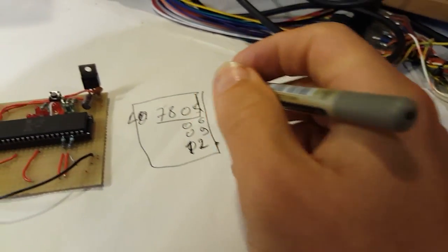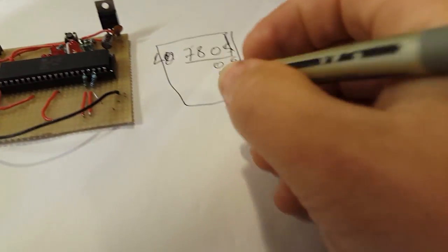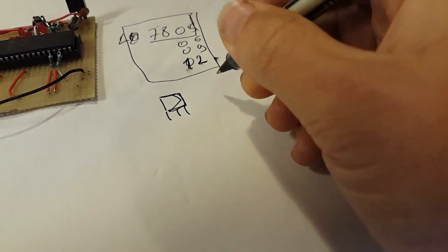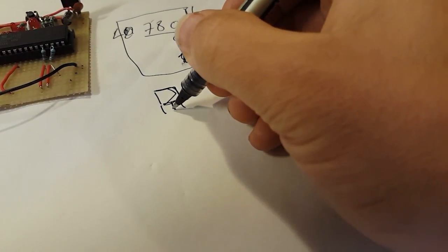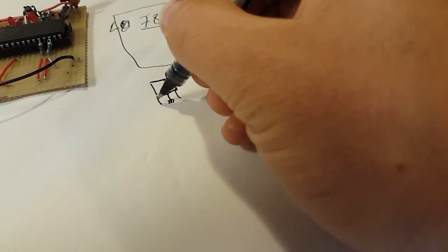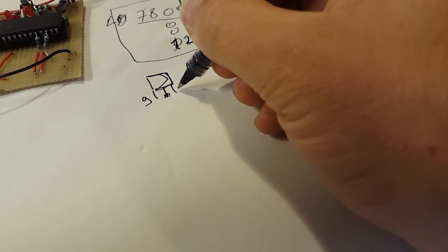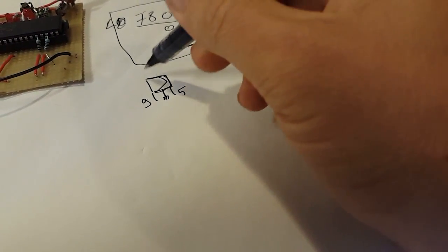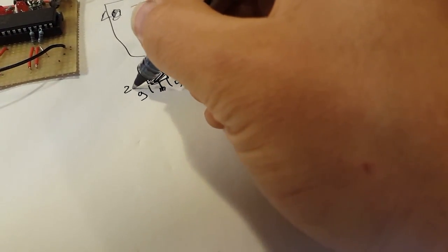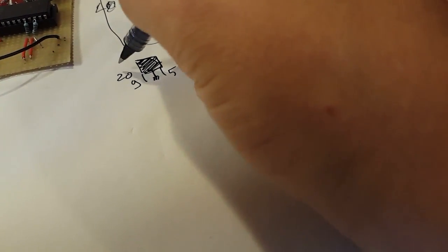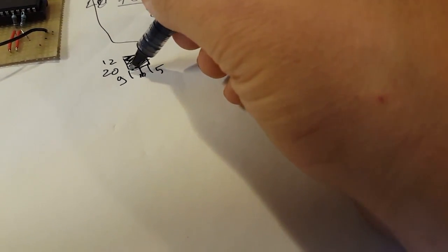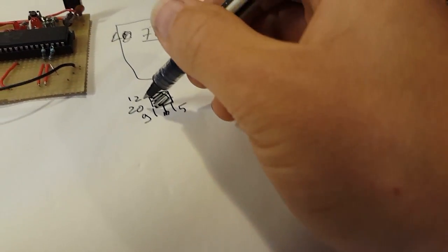In this case we have a 7805 - it's a 3-pin regulator. Center pin is ground, here you have your input voltage, in this case 9 volts, and it outputs 5 volts. The beauty with these is that even if I sent 20 volts, it would still output 5 volts. If I send 12 volts, it would still output 5 volts.